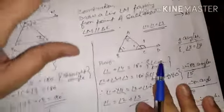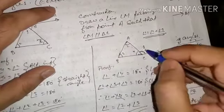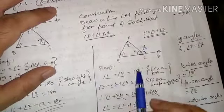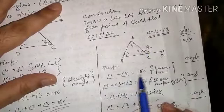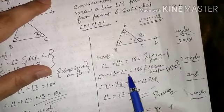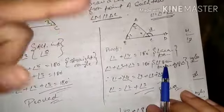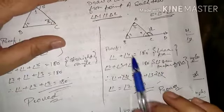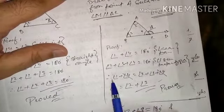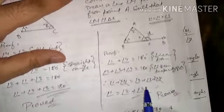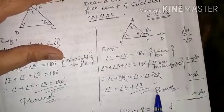Theorem 8 (exterior angle property): if a side of a triangle is produced, the exterior angle formed equals the sum of the two opposite interior angles. For triangle ABC with side extended to D giving exterior angle 1, and interior angles 2, 3, 4: angle 1 plus angle 4 equals 180 degrees (linear pair), and angle 2 plus angle 3 plus angle 4 equals 180 degrees (angle sum property). Equating, 4 cancels out, giving angle 1 equals angle 2 plus angle 3.